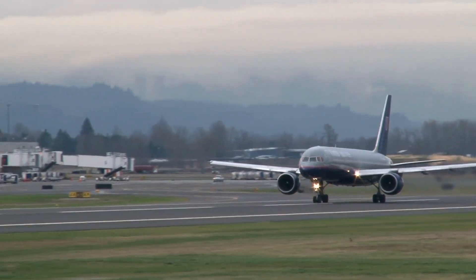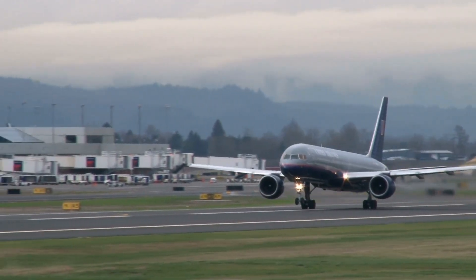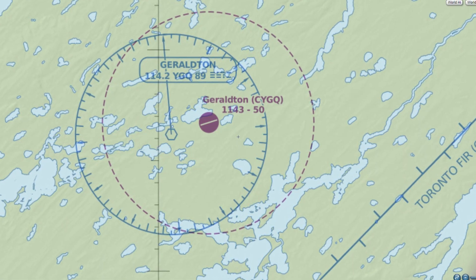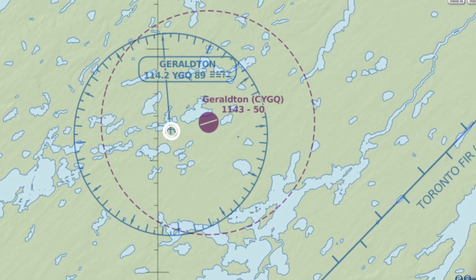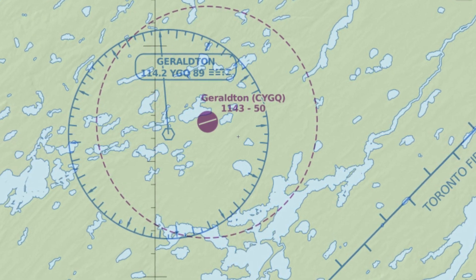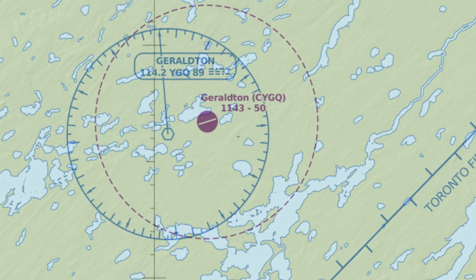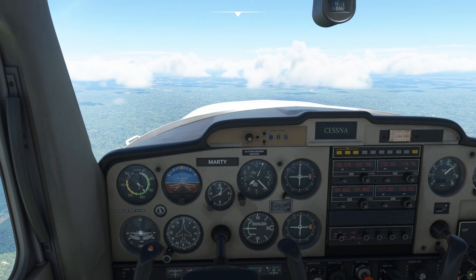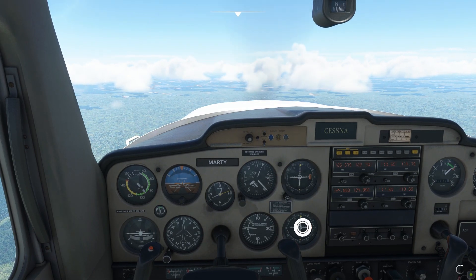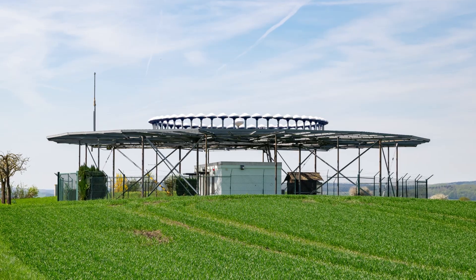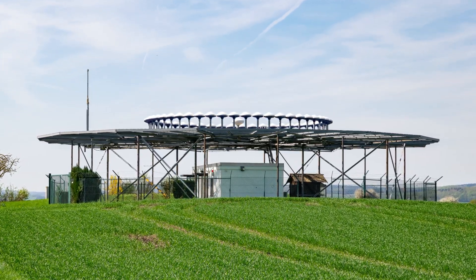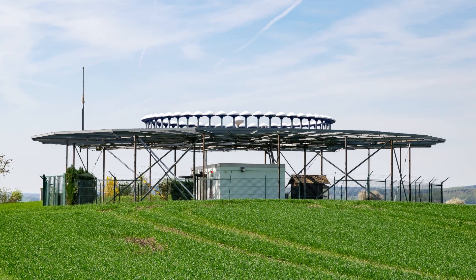Almost every airport has VOR. On the map, the VOR is represented by a hexagonal symbol. It is usually indicated with its frequency and its Morse code identifier. Inside the cockpit, you have your VOR receiver and your VOR indicator. You must have seen this strange contraption at your local airport — this is a VOR antenna.